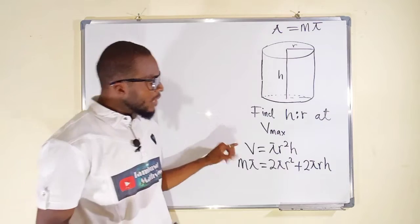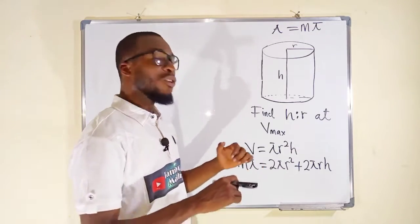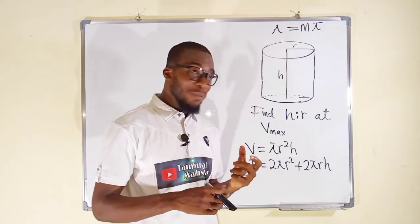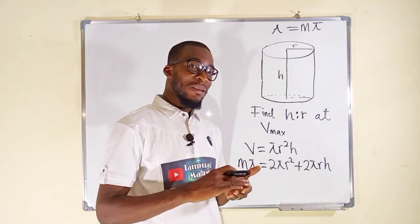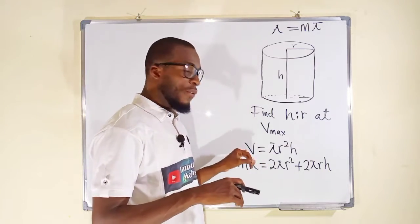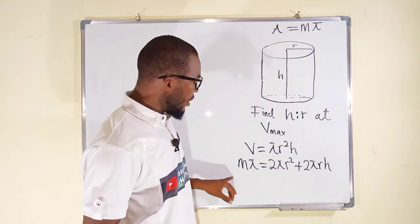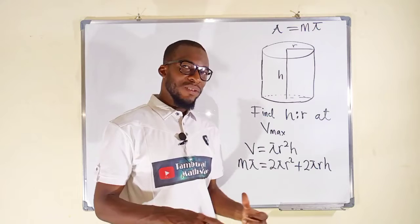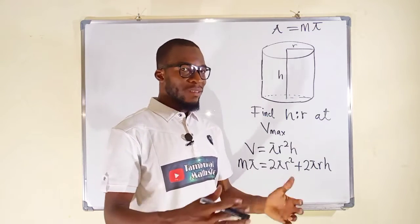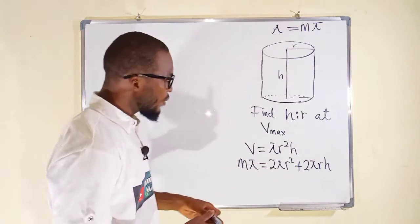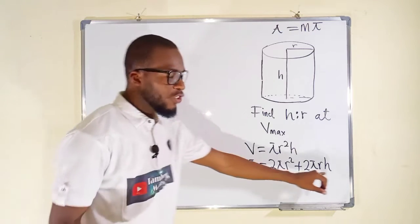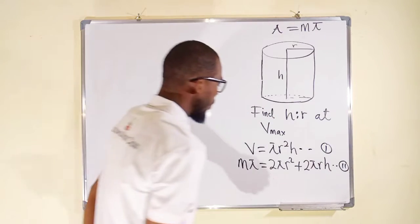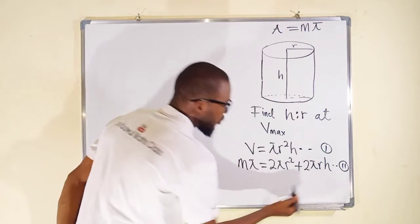Looking at the first equation, it is expressed in terms of both r and h. Since we want to find the critical points, we need to differentiate V with respect to either r or h. From the second equation, we can make h the subject, substitute it back into the first equation, differentiate, and set everything equal to zero.